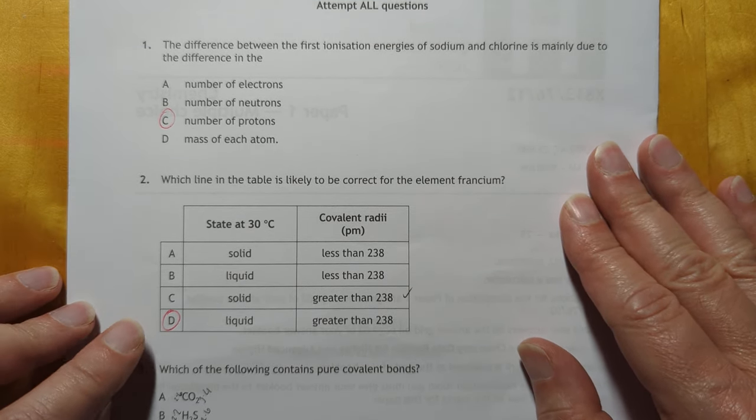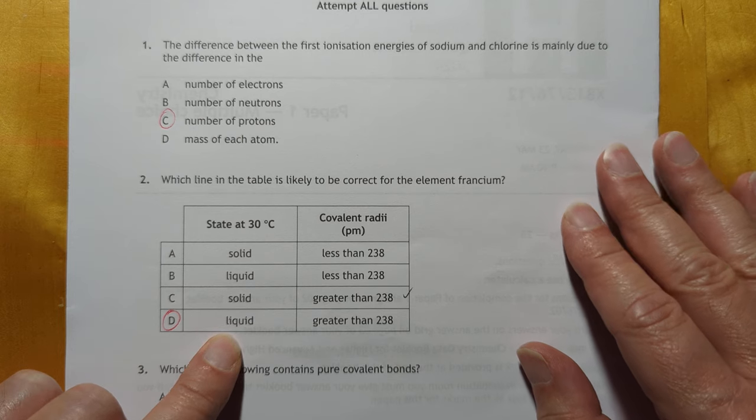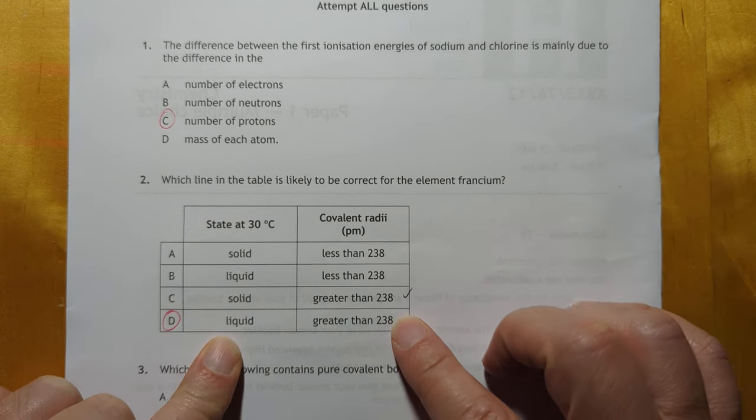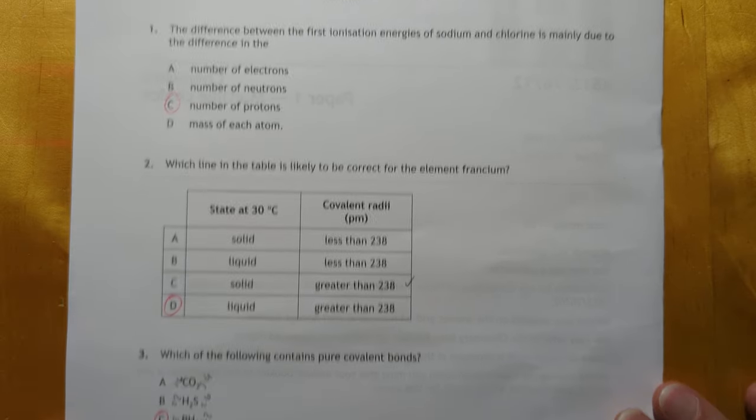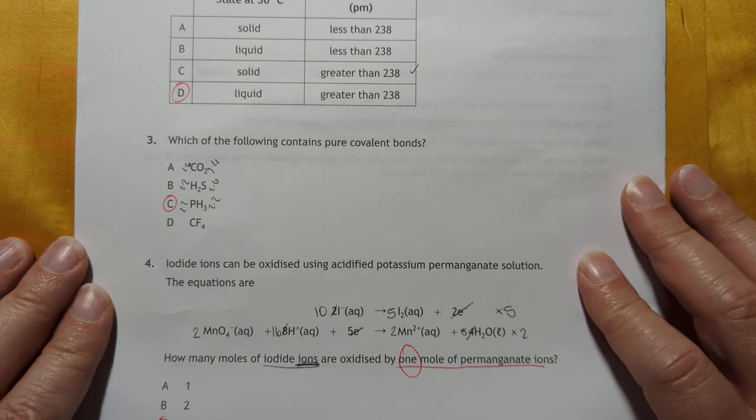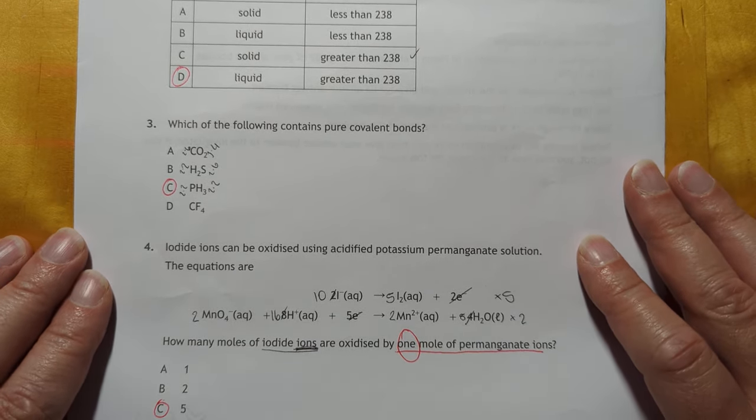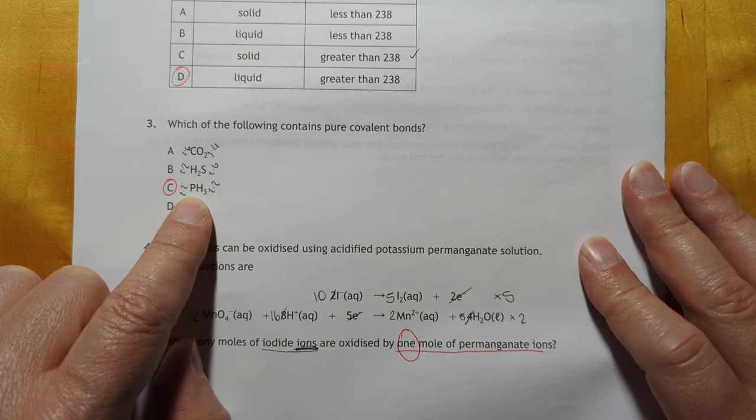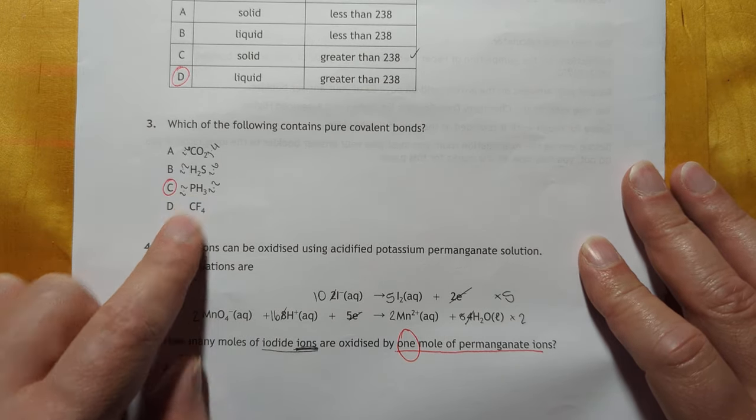Number two. Francium. It's going to be a liquid because its melting point is likely to be less than 30. And it's going to have a covalent radius greater than 238. Covalent bonds. Pure covalent bonds. In fact, let me just check my screen. Yes, I am. Pure covalent bonds. Identical electronegativity numbers.